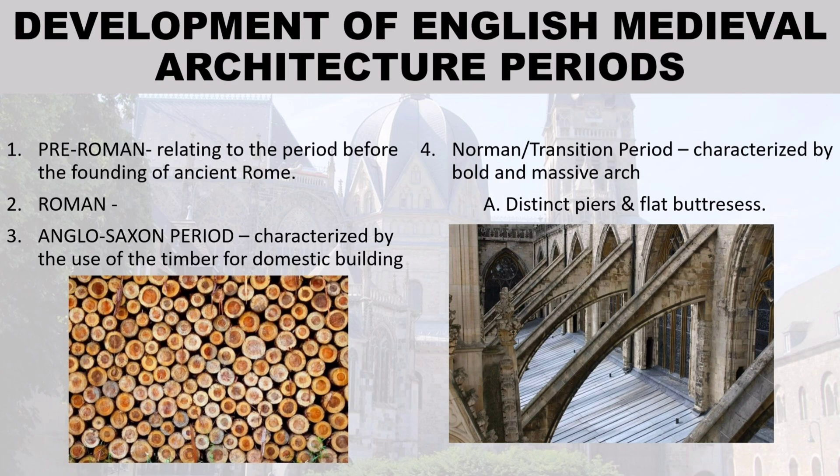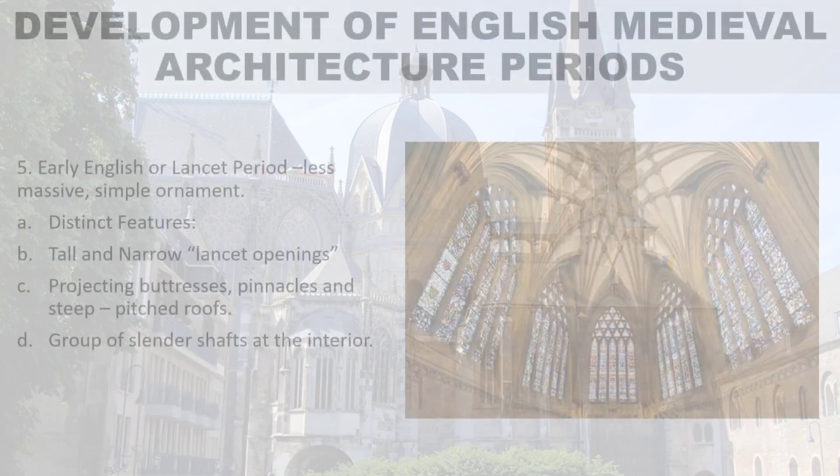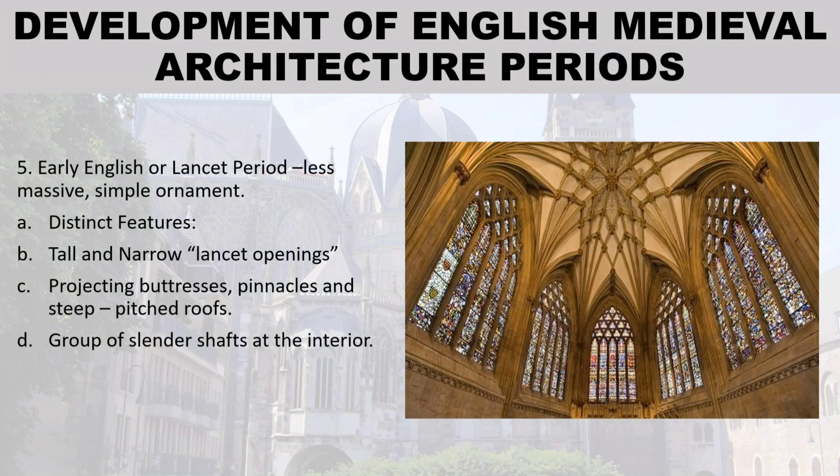Number four: Norman or Transition period, characterized by bold and massive arches, distinct piers, and flat buttresses. Number five: Early English or Lancet period — it is less massive and uses simple ornament.